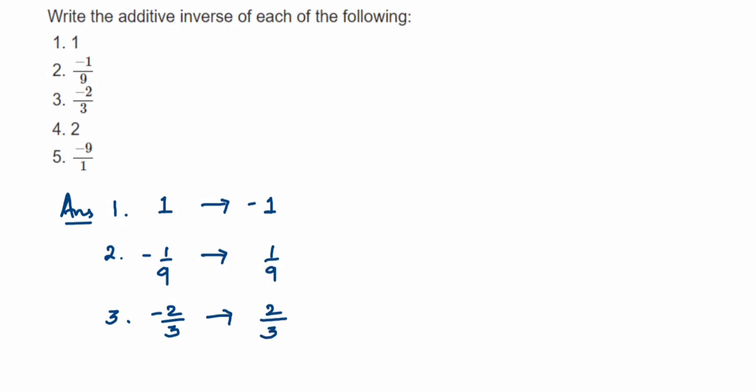Then fourth question, it's 2. So additive inverse of 2 will be minus 2. So when you add 2 and minus 2, the answer will be 0.